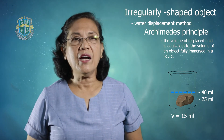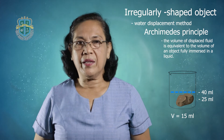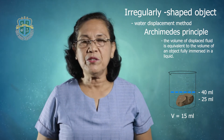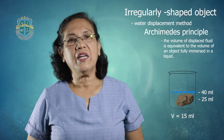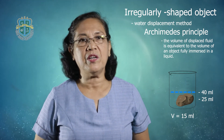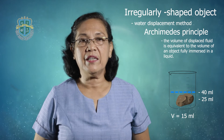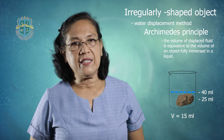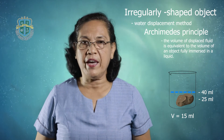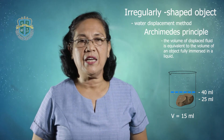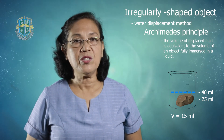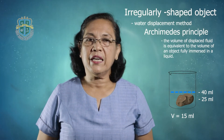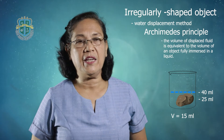Based on Archimedes' principle, the volume of the liquid displaced is equal to the volume of the object totally immersed into the liquid. Because in this problem there is a displacement of 15 ml, we can say that the volume of the stone dropped into the beaker with water is also 15 ml.